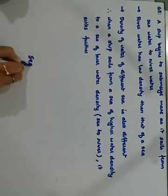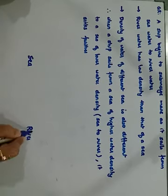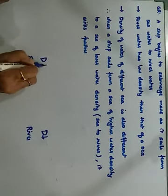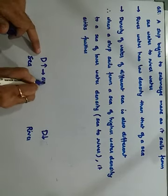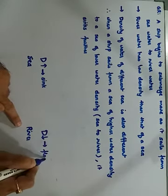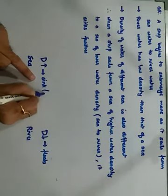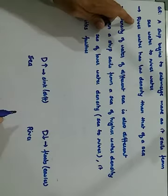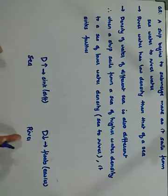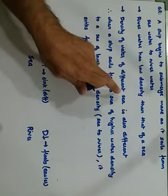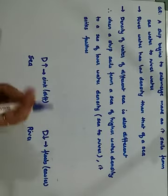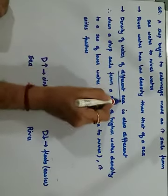A ship begins to submerge more as it sails from sea water to river water. The simple reason is that river water has lower density than sea water. Because the density of different seas differs due to salinity — as salt increases, density increases. When a ship moves from sea water (higher density) to river water (lower density), the density decreases and therefore the ship sinks further. It becomes more difficult to sail in river water and easier in sea water.